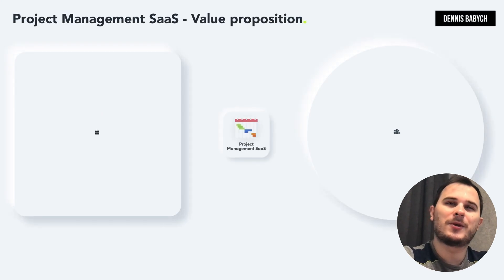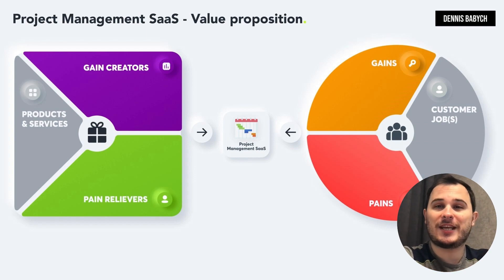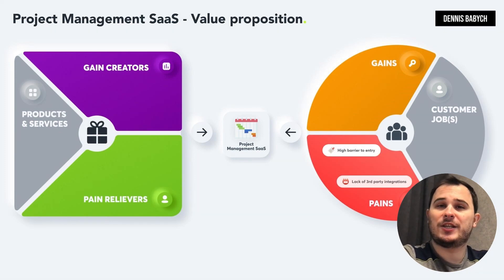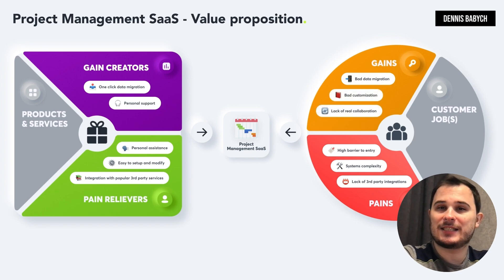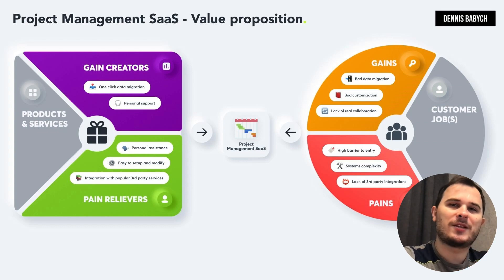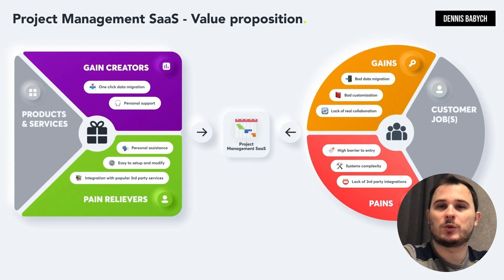One of the most crucial steps in creating your startup is achieving a product-market fit — it's a game changer. How can you offer innovative and disruptive solutions that address the pains and gains of your target audience? Completing your value table is the key. Before diving into the software development phase, it's important to identify the pains and gains of your users — things like complexity of existing systems, high barrier to entry, lack of integration with third-party services, uncomfortable data migration, bad customization, and lack of real-time collaboration. Once you've identified these issues, leverage your platform to tackle them by providing easy-to-set-up system features, personal assistance, integration with all popular third-party services, and one-click data migration.